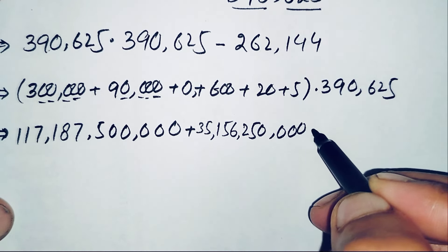Multiplying 390,625 by 0 gives 0. Multiplying 390,625 by 600: 6×5=30 (write 0, carry 3), 6×2=12 plus 3 is 15 (write 5, carry 1), 6×6=36 plus 1 is 37 (write 7, carry 3), 6×0=0 plus 3 is 3. Continuing and carrying through gives 234,375,000.